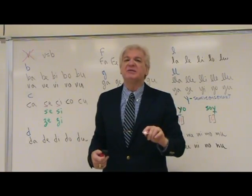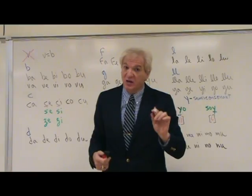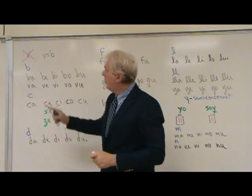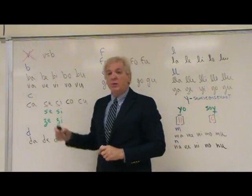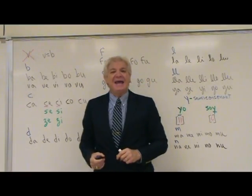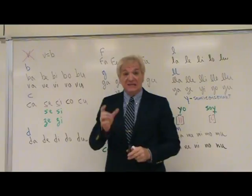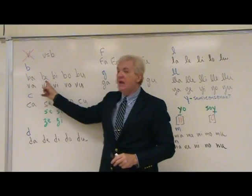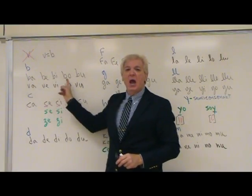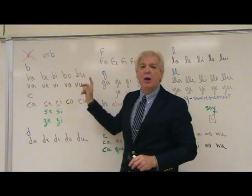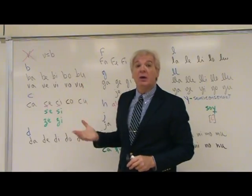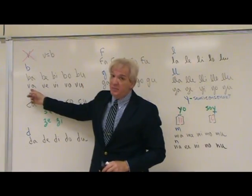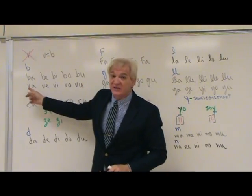We dropped the V sound in the 17th century — it's been a little while now. So with the letter B, the syllables are Ba, Be, Bi, Bo, Bu. And for the V it would be the same, because there is no V sound.